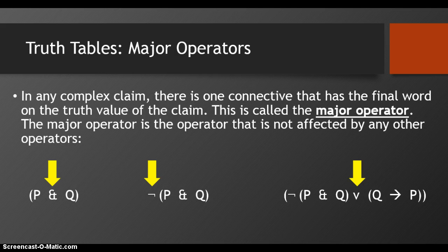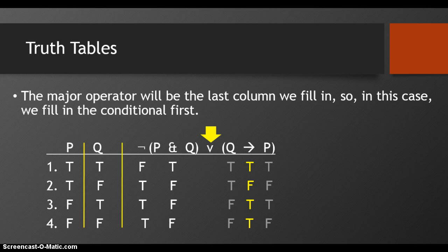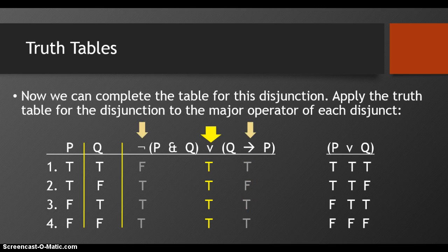We'll construct the truth table for the major operator last. Since the major operator will be the last column we fill in, we first need to know the truth table for the conditional. We know our truth table for the negation — it's not the case that P and Q — so we fill in the truth table for 'if Q then P.' Now we can complete our table by applying the truth table for the disjunction to the major operator of each disjunct: the column under the negation for the left disjunct and the column under the conditional for the right disjunct. Taking those two columns and applying the truth table for the disjunction, we can formulate our column underneath the disjunction.